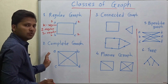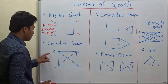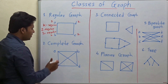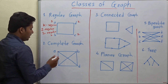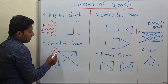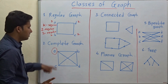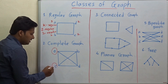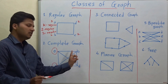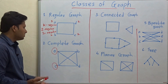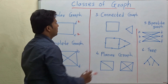The next class is complete graph. In a complete graph, every vertex is connected to every other vertex. If we take vertex A, then A shares an edge with every other vertex. If you take C, then C shares an edge with every vertex in the graph. So this is the complete graph.